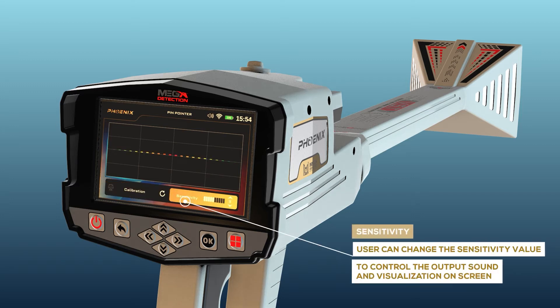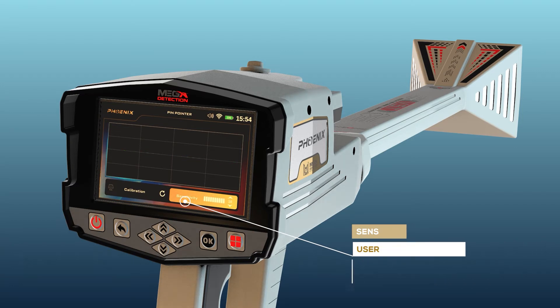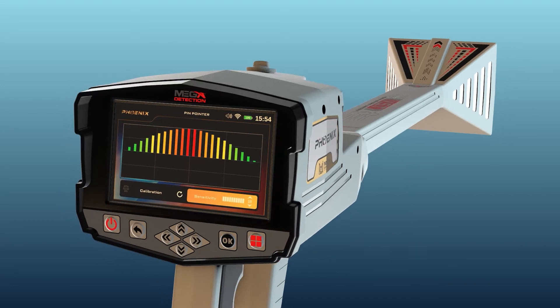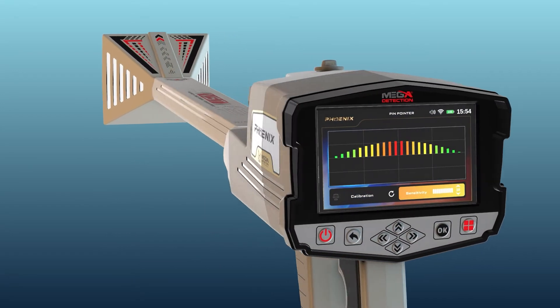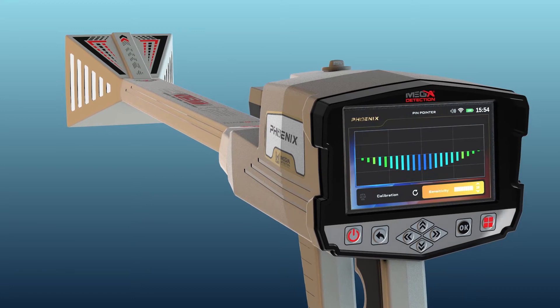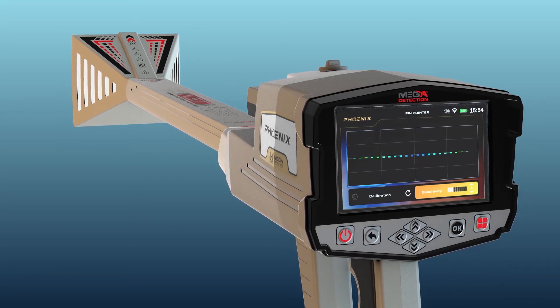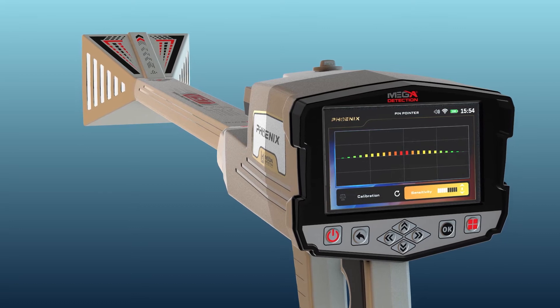Sensitivity. During the search process and according to the target scan, the device will make a special sound tone with a graphical presentation on the screen that represents the presence of the target underground. User can change the sensitivity value at any time to control the output sound and visualization on screen.